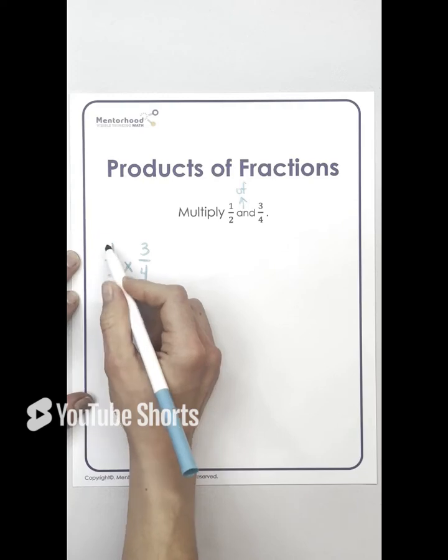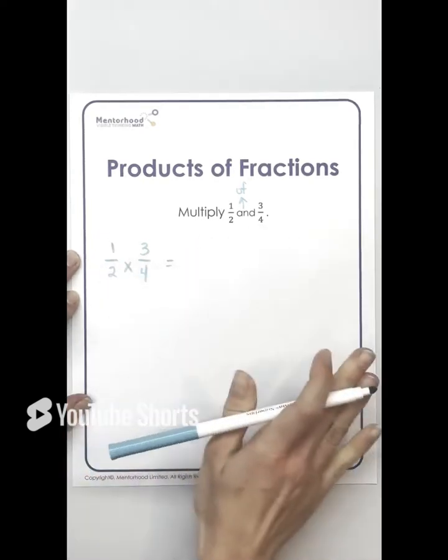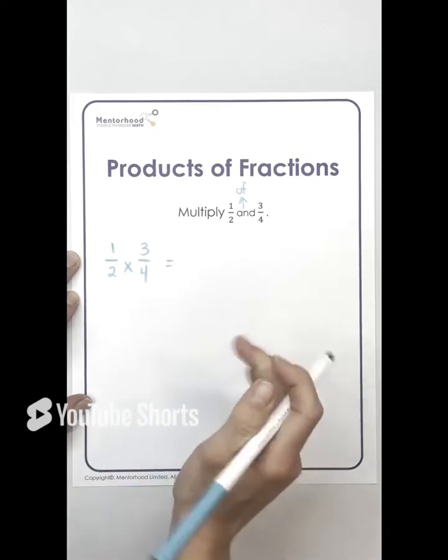One half times three quarters. You're saying I want half of three quarters or vice versa. So multiplying fractions is super simple. It's probably the easiest thing you're going to do with fractions.